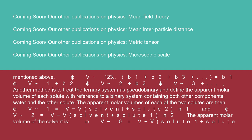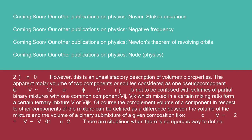Another method is to treat the ternary system as pseudobinary and define the apparent molar volume of each solute with reference to a binary system containing both other components (water and the other solute). The apparent molar volumes of each of the two solutes are then φV₁ = (V - V_{solvent+solute2})/N₁ and φV₂ = (V - V_{solvent+solute1})/N₂. The apparent molar volume of the solvent is φV₀ = (V - V_{solute1+solute2})/N₀.